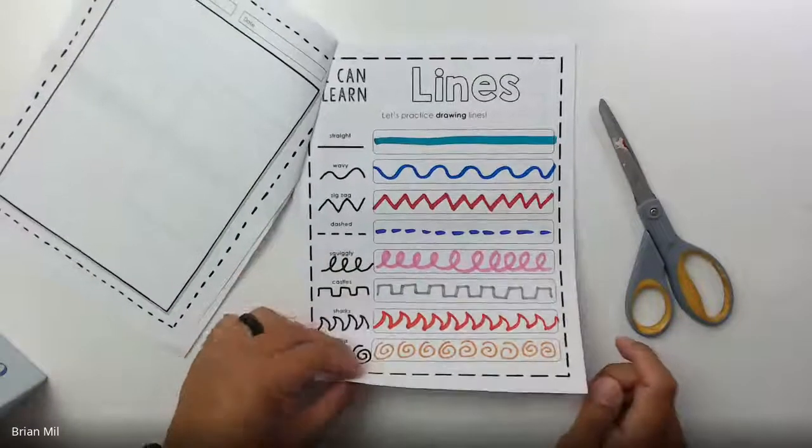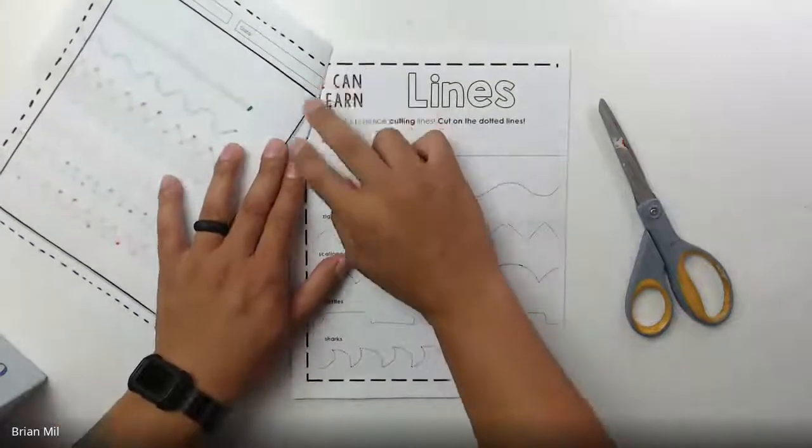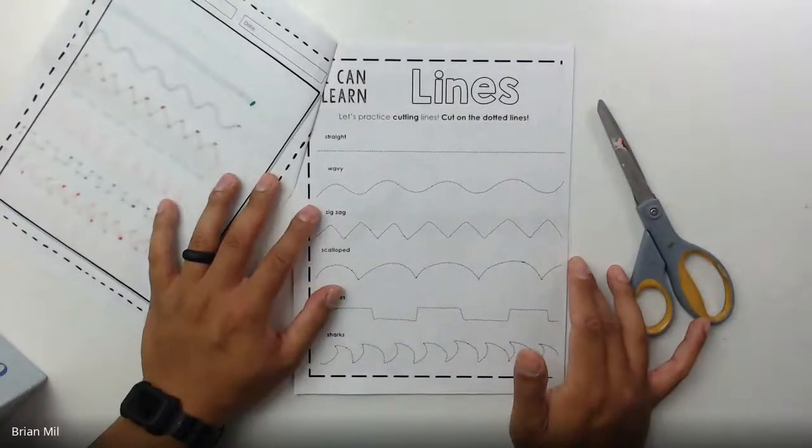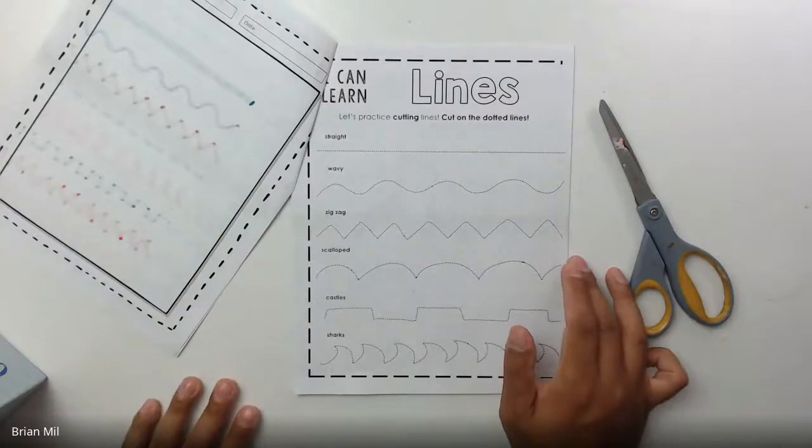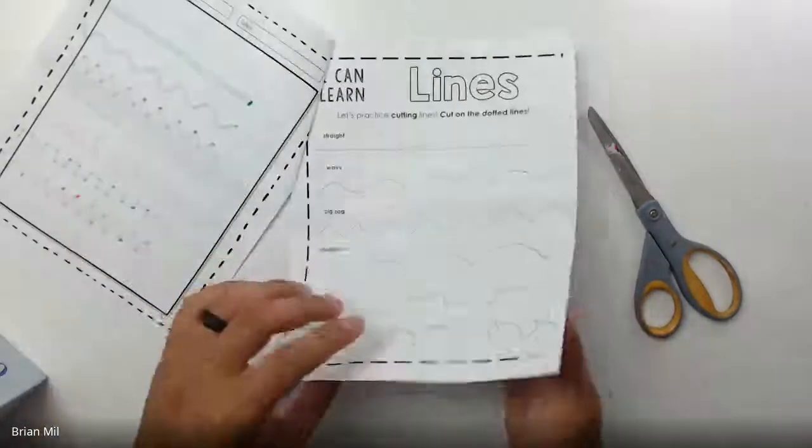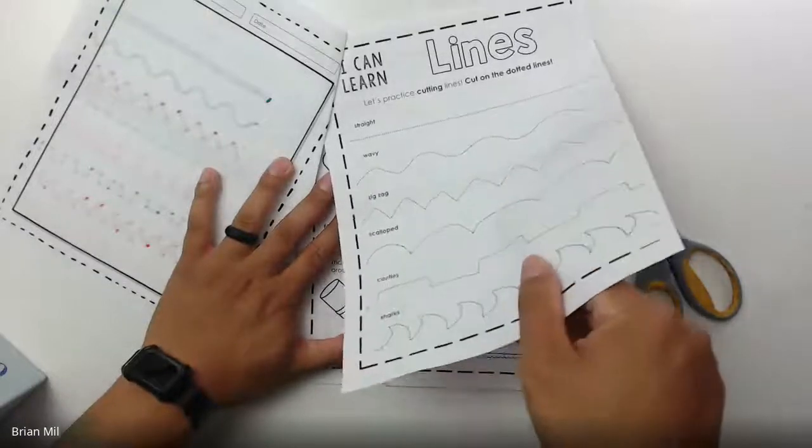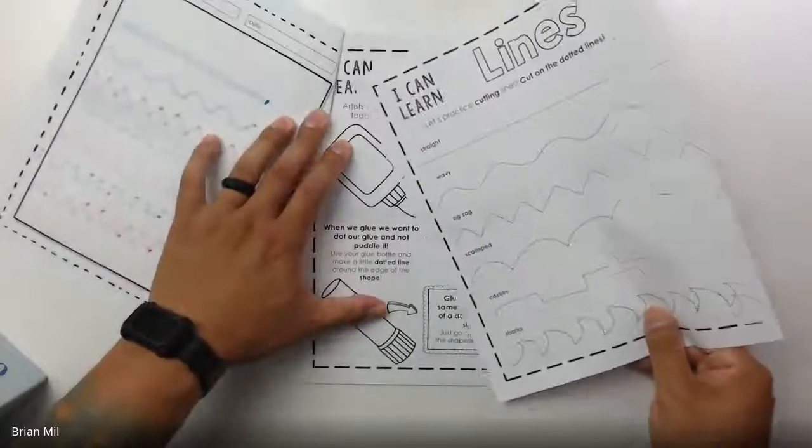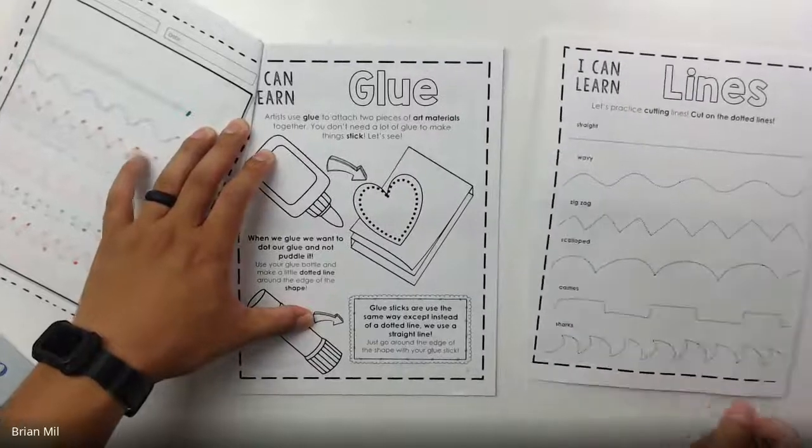We learned about lines over here as well. Guess what? We're going to keep learning about lines but in a different way. This page right here has dotted lines. My best suggestion for you guys is to take this page and try to pull it out or remove it from your packet.